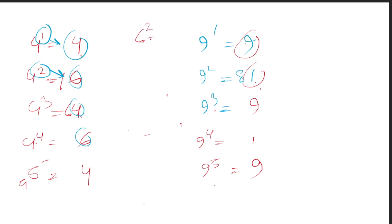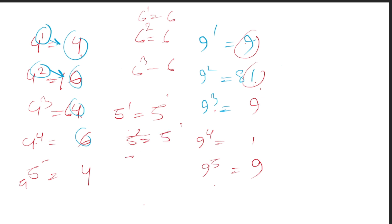6 squared ends in 6. 6 to the power 1 is 6. So 6 always ends in 6. 5 to the power 1 is 5. 5 squared ends in 5. So 5 always ends in 5. Both 5 and 6 always repeat the same unit digit regardless of the power.